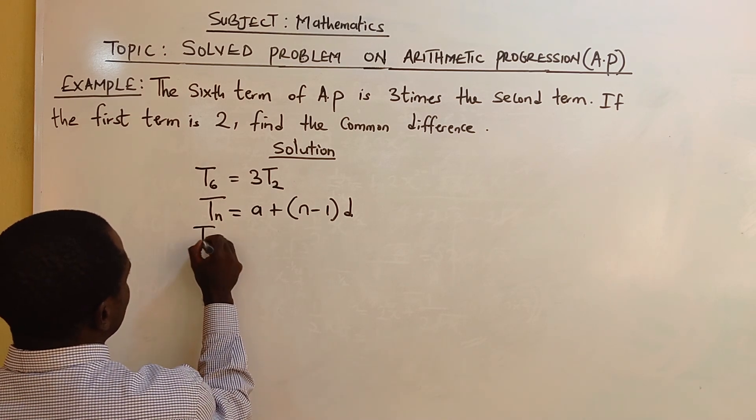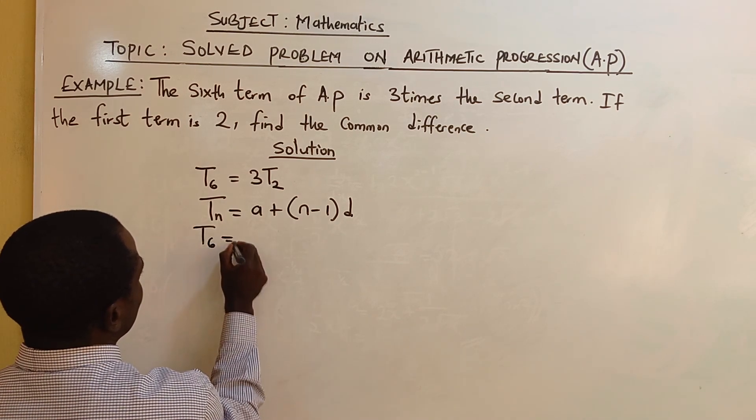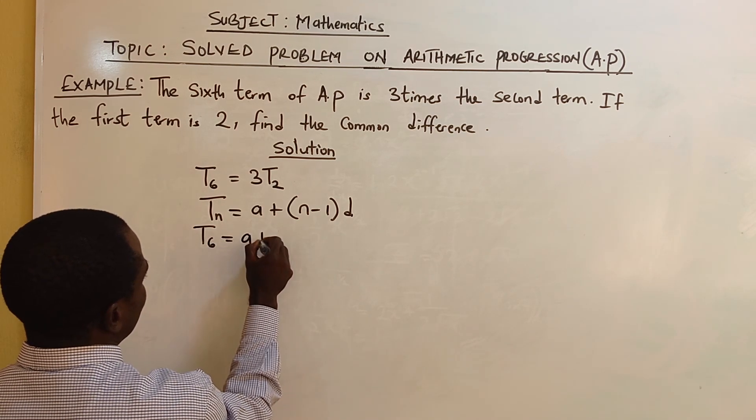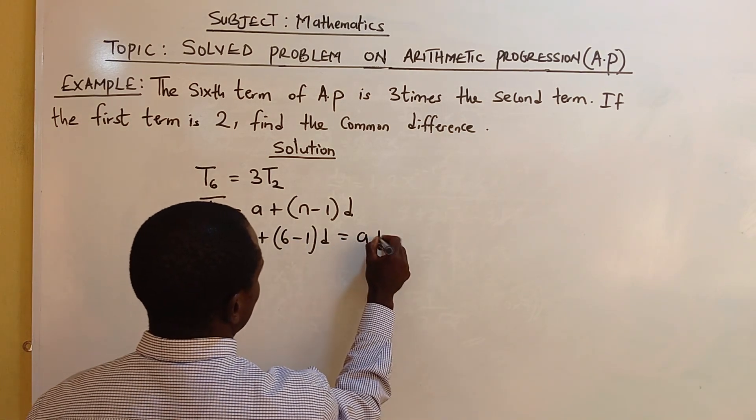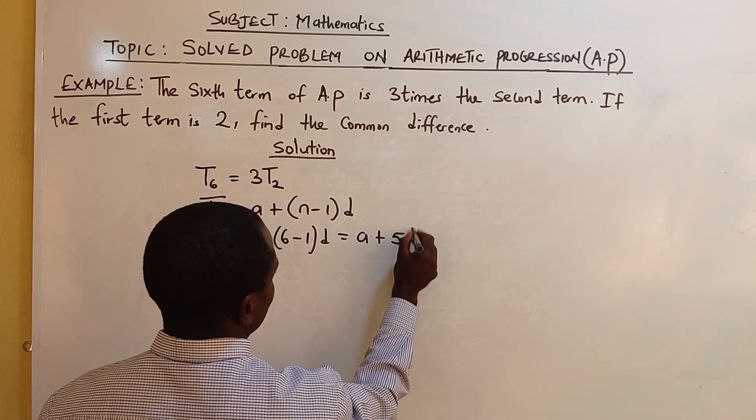Let's look for T6. T6 equals A plus 6 minus 1 D, which is A plus 5D.